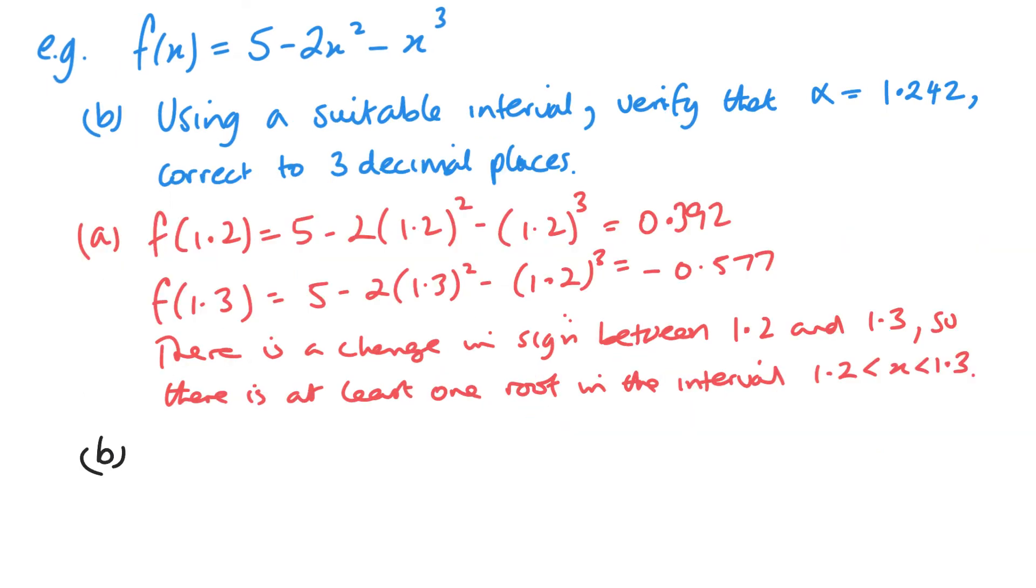And then part b is, using a suitable interval, verify that alpha equals 1.242, correct to three decimal places. Now for this, I need to go to an extra decimal place. So I'm going to go to the fourth decimal place.